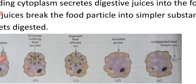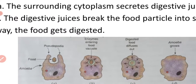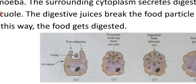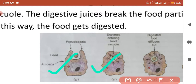Lastly, if some undigested food is left, it will be thrown out from the body of amoeba. This process is known as ejection. For the diagram, you just need to draw Figure A and Figure B, because the question is only about the feeding and digestion of amoeba. There is no need to draw Figures C, D, and E — Figure A and B is sufficient.